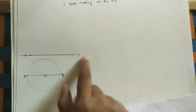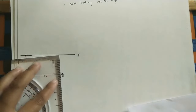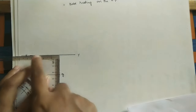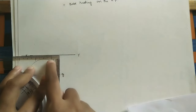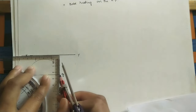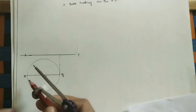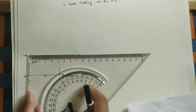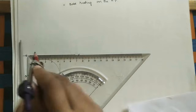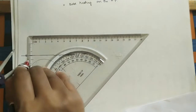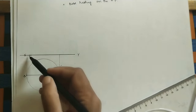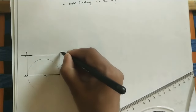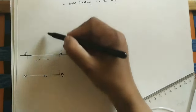Draw projector lines at 90 degrees to the XY line. Using a protractor, align the scale with the XY line and set the angle to 90 degrees. At point G draw the projector line, and similarly at point A draw the projector line. Mark these intersection points in the front view as A-dash and G-dash. Draw the axis line here.